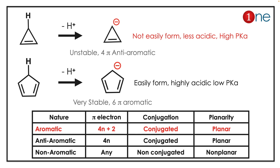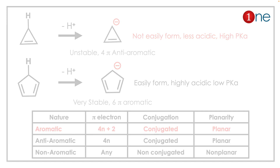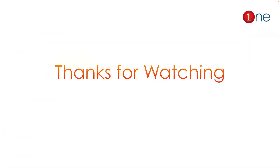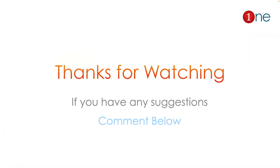It will have a highly acidic character, so it will definitely have a low pKa. So, according to intermediate stability by Hückel's rule, the cyclopropene one has a high pKa. That's all from this video — thanks for watching.